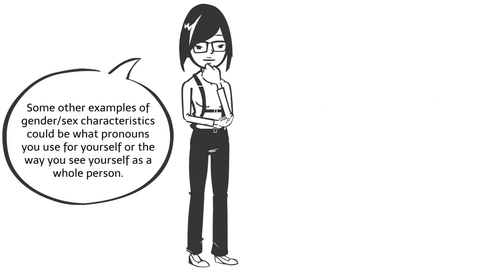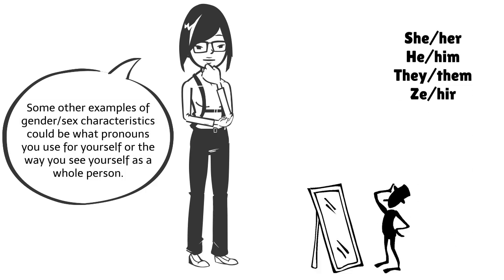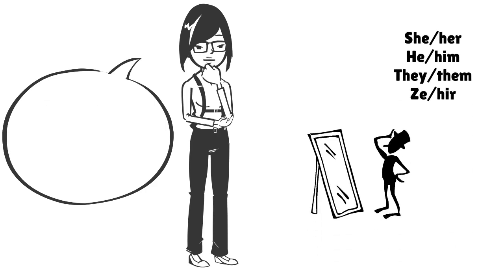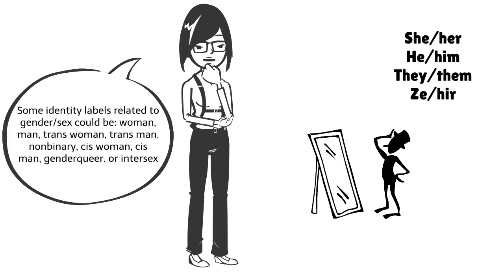Some other examples of gender sex characteristics could be what pronouns you use for yourself or the way you see yourself as a whole person. Some identity labels related to gender sex could be woman, trans man, or non-binary, among others.